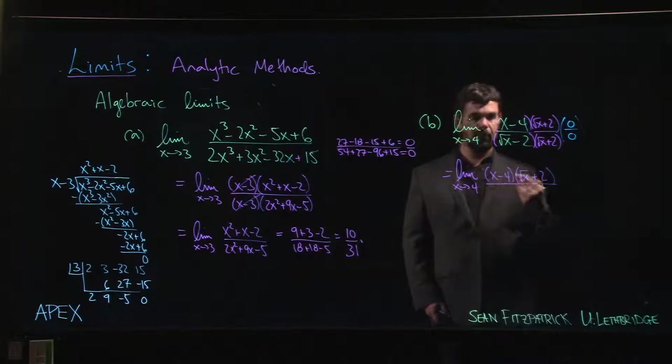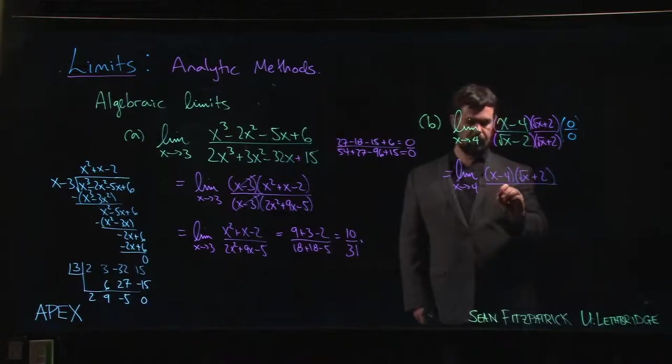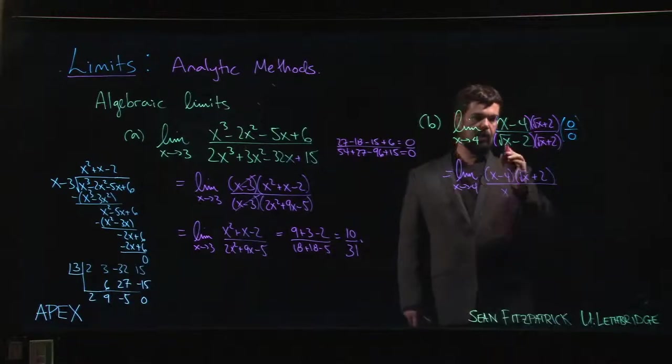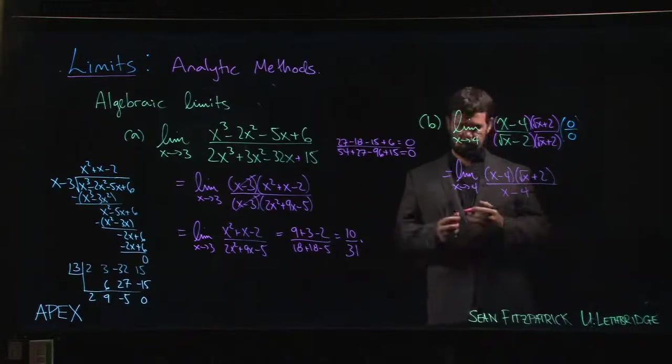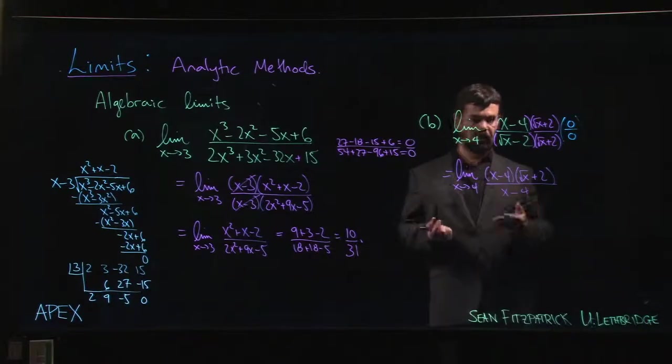√x times √x is x. Then I have √x times 2, so 2√x plus 2√x, but then I have minus 2√x, so those cancel. The √x terms cancel, and then I just have minus 2 times 2, minus 4. That's the whole point—it simplifies down to x - 4, rationalizing in the sense that we got rid of that square root.